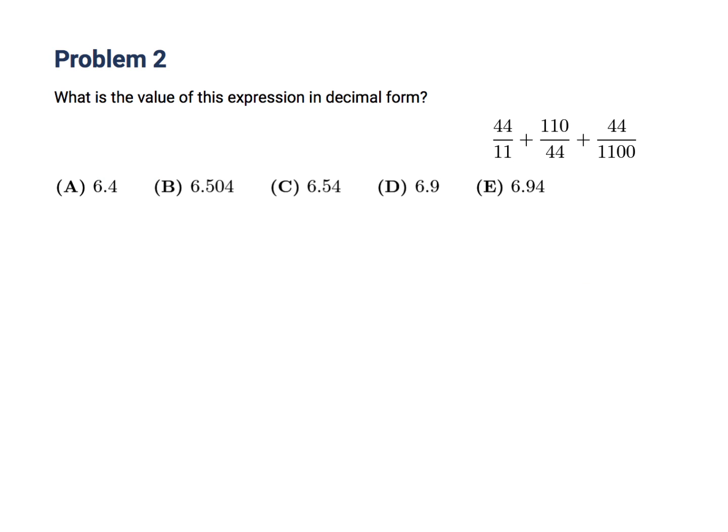What is the value of this expression in decimal form? 44 over 11, 110 over 44, and 44 over 1100. 44 over 11, well, that's 4. This is 2.5, actually. So those are pretty easy.